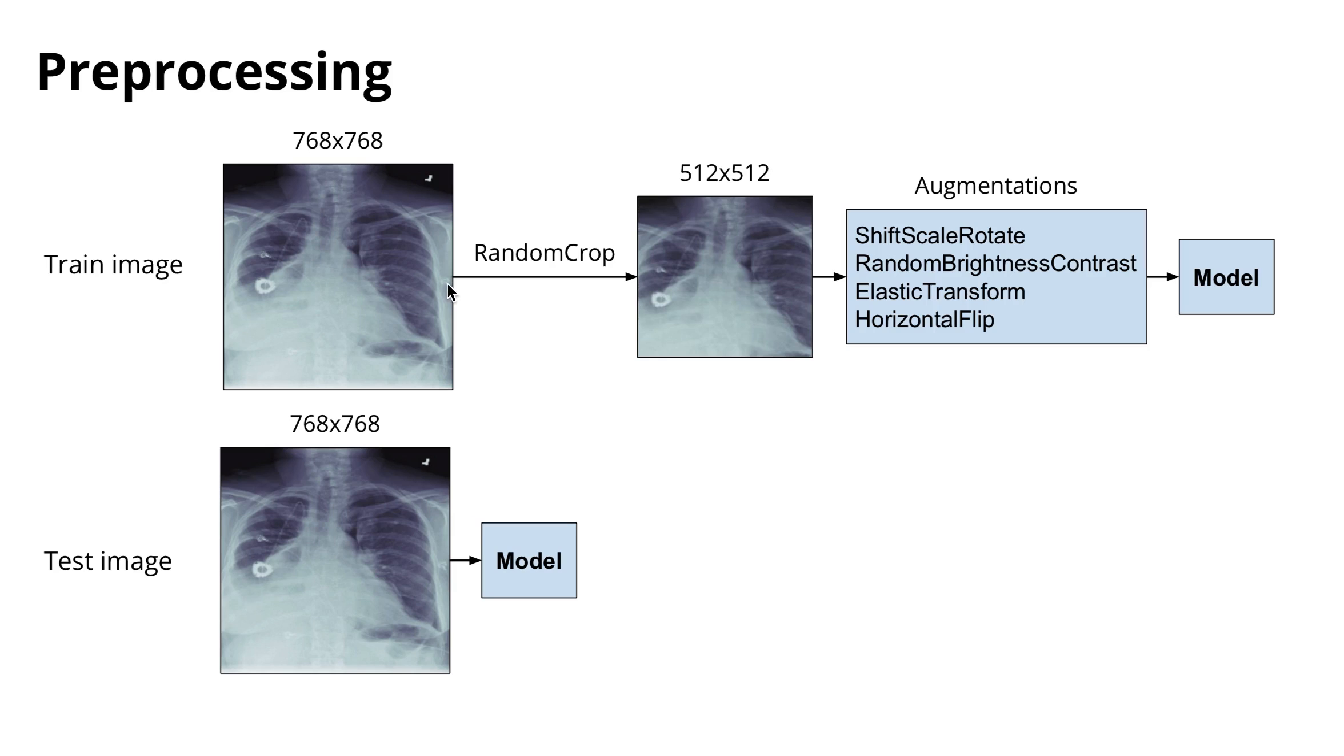The first step is image preprocessing. During the training, the original image was reduced to a resolution of 768 by 768. Then I made a random crop of size 512 by 512. Then various augmentations were used to increase the trained dataset.